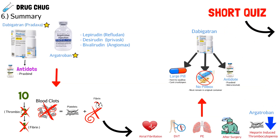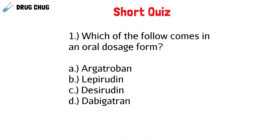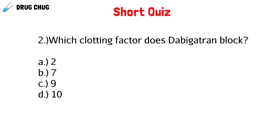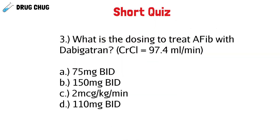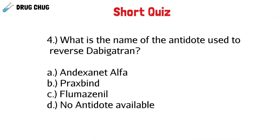Quick quiz: Question 1 — Which of the following direct thrombin inhibitors comes in an oral dosage form? Question 2 — Which clotting factor does dabigatran block? Question 3 — What is the dosing to treat atrial fibrillation with dabigatran? Question 4 — What is the name of the antidote used to reverse dabigatran?